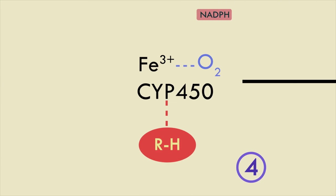Step 4 is similar to step 2. NADPH gets oxidized to NAD+, transferring its electron to the complex. However, note that the electron is not accepted by the iron atom, instead it is accepted by the oxygen atom.